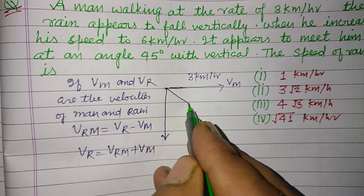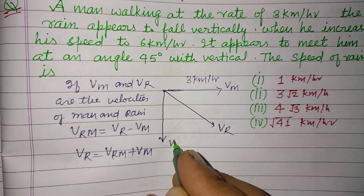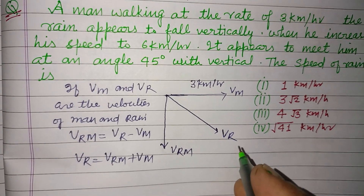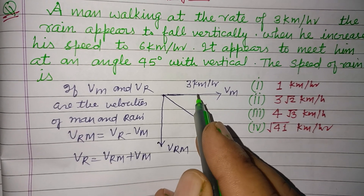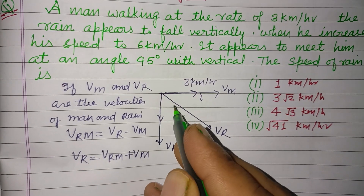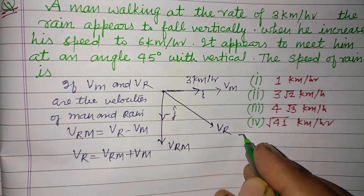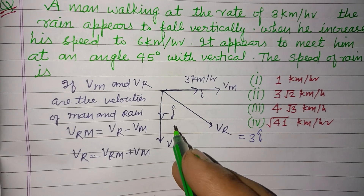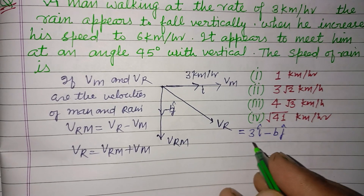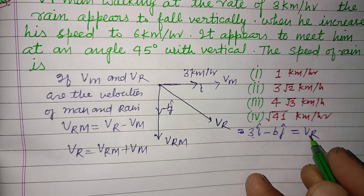Here we take the resultant between these two. This is V_R and this is V_RM. V_R can be written in component form: the X direction uses i-cap, and the vertically downward direction uses minus j-cap. Its coefficient is 3i, and let the j coefficient be b, so minus bj. Therefore, V_R equals 3i minus bj.